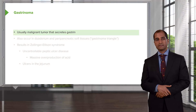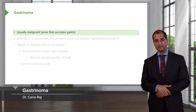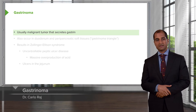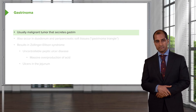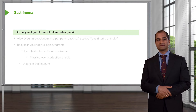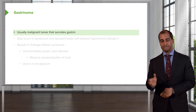Our second pancreatic islet cell tumor is gastrinoma. You may know this as being ZE — Zollinger-Ellison syndrome.